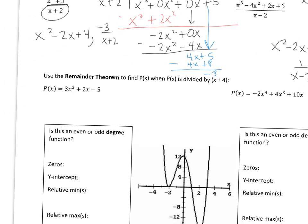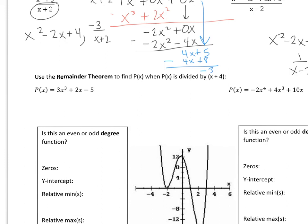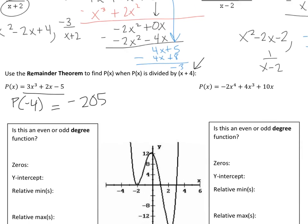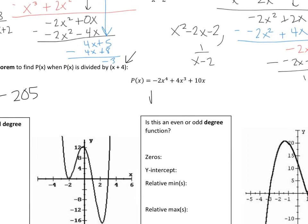Use the remainder theorem: if you have x plus 4 as a factor, you can plug in negative 4 into the function to get the remainder without actually doing the division. So if I plug in negative 4 for x in this one, I get negative 205, meaning x plus 4 is not a factor because there's a remainder that's not zero. Same thing with the other one — plugging in negative 4, I get negative 808.